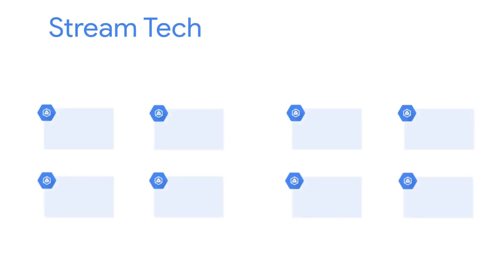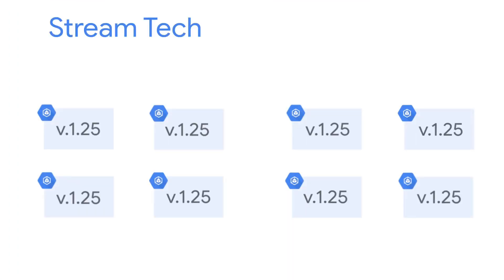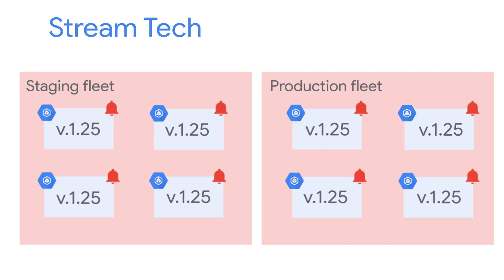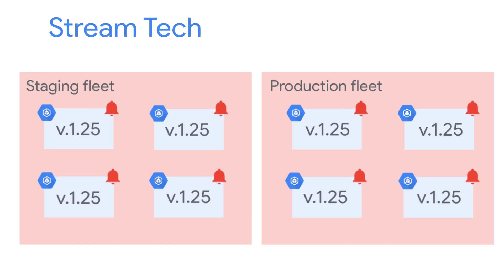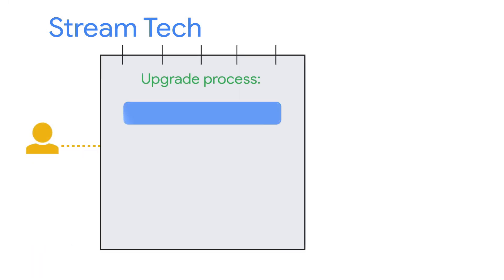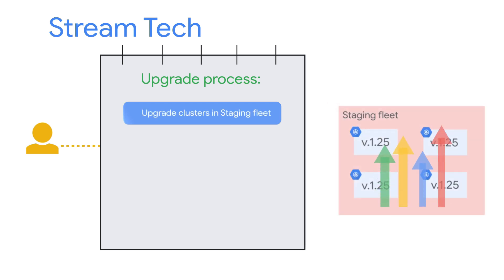StreamTech is a company running their GKE clusters on version 1.25. They've organized their clusters into two fleets — staging and production. All their clusters are enrolled in the regular release channel for automatic upgrades. When a new version is released, StreamTech would like to follow a specific sequence, starting with the staging clusters being upgraded first.